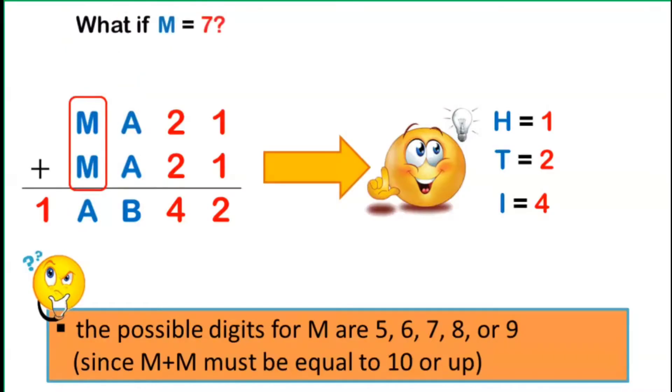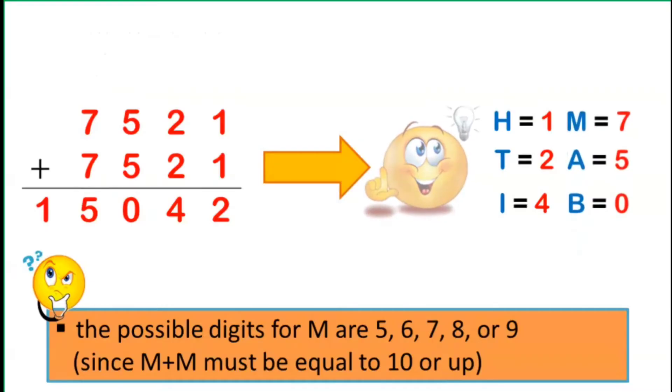Next, we suppose that M is equal to 7. So, we replace letter M by 7. If we assume that there is a carry over of 1, then 7 plus 7 plus 1 is equal to 15. And so, the letter A must be 5. No conflicts so far. So, we replace all A's by 5. Now, 5 plus 5 is equal to 10, which means B must be equal to 0. And finally, we found our solution to the problem.